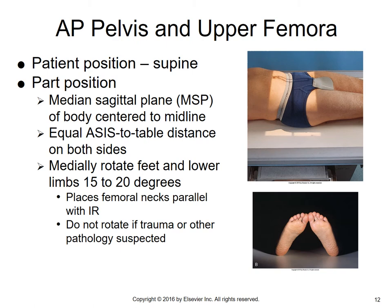For the AP pelvis and upper femora, the patient is supine. The median sagittal plane of the body is centered to the midline of the table, with equal ASIS-to-table distance on both sides, meaning the patient isn't rotated. Sometimes a small sponge is placed under the patient's pelvis to equalize that distance. Very importantly, we want to medially rotate the feet and lower limbs 15 to 20 degrees — inverting the toes and feet — which places the femoral necks, normally at an angle, parallel to the IR and avoids foreshortening.